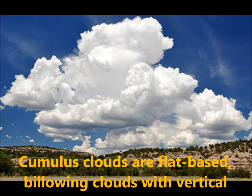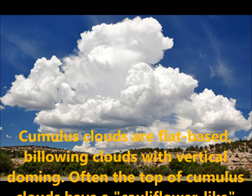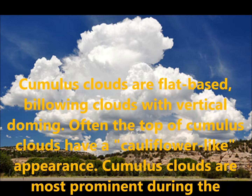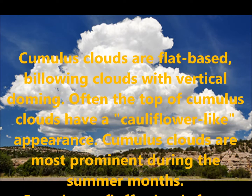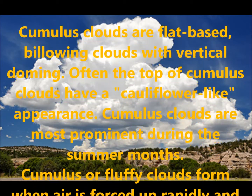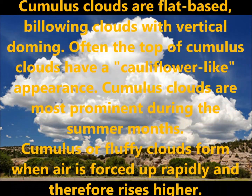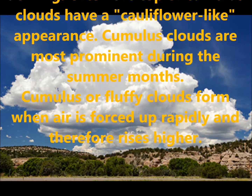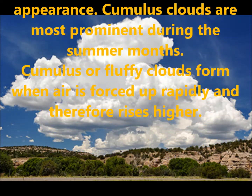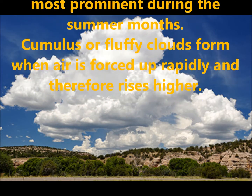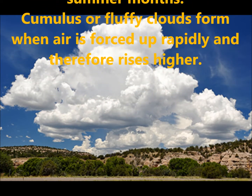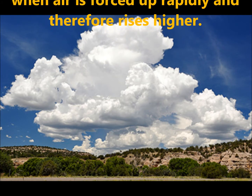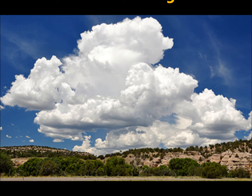Cumulus clouds. These are flat-based, glowing clouds with vertical domain. Often the tops of cumulus clouds have a cauliflower-like appearance. Cumulus clouds are most prominent during the summer months. These are fluffy clouds formed when air is forced up rapidly and therefore rises up. Children, from this lesson we can learn about the importance and uses of water and the types of clouds. Thank you.